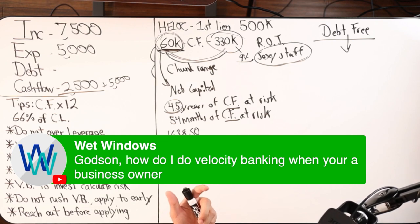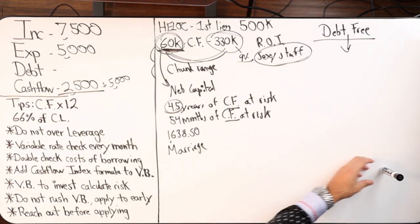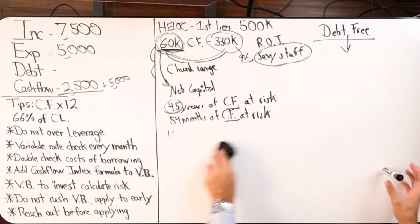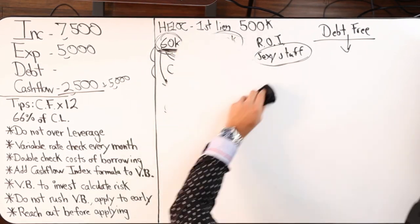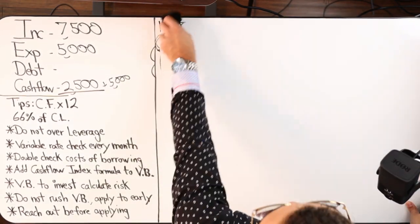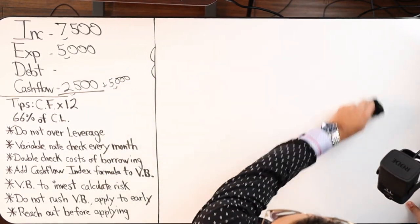So it's the same thing when you're doing velocity banking on the personal. Same system. The rules don't change. The only thing that changes is your debt tool.